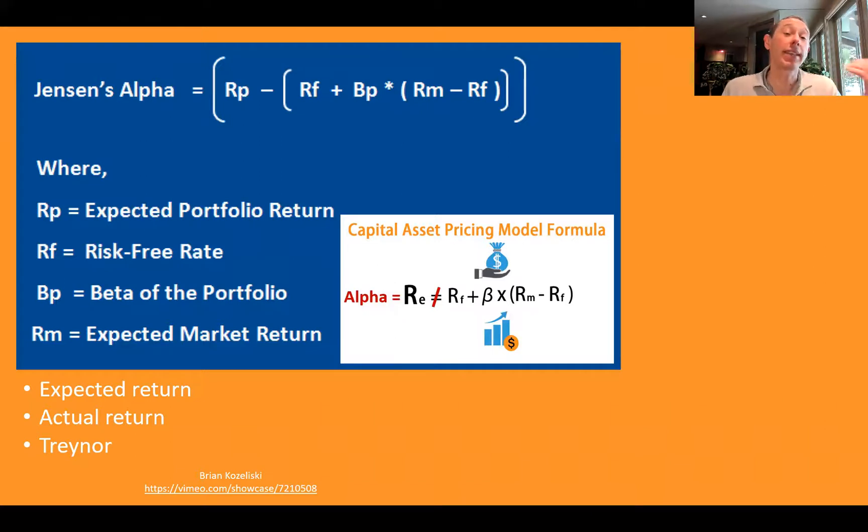We're going to say, hey, that's alpha. So we're going to say alpha is going to be equal to our portfolio return minus this whole number here. OK, so the expected return that we get from CAPM, that's going to be Jensen's alpha. It's related to Treynor in that we're using beta again, not a standard deviation here.